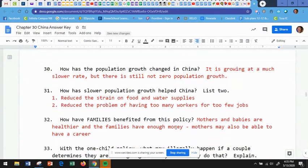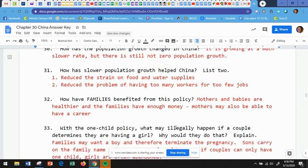Number 30, how has the population growth changed in China? It is growing at a much slower rate, but there is still not zero population growth. So it has slowed down, but it's still not not growing. Number 31, how has slower population growth helped China? List two. Number one, reduce the strain on food and water supplies. So you have less people starving because there is more food because you don't have as many people growing and doubling so quickly. And the second one is reduce the problem of having too many workers, but not enough jobs for those workers because then you have people who have unemployment.